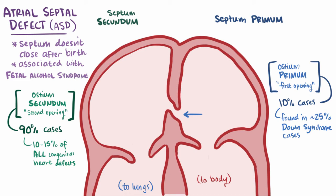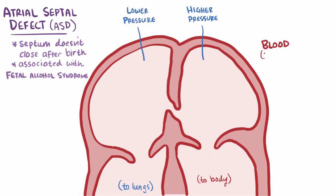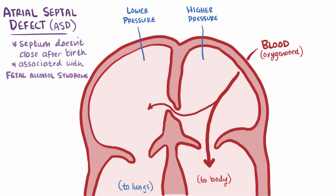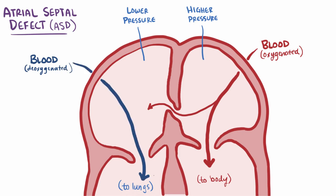So there's this opening in the septum — pressure is higher on the left side than on the right, and this pressure difference causes blood to be shunted from the left atrium to the right atrium, meaning more oxygenated blood gets over to the right side, which is usually deoxygenated blood. This type of defect is an acyanotic heart defect, which means not blue, since oxygenated blood is going into the pulmonary circulation and essentially taking an extra trip to the lungs.